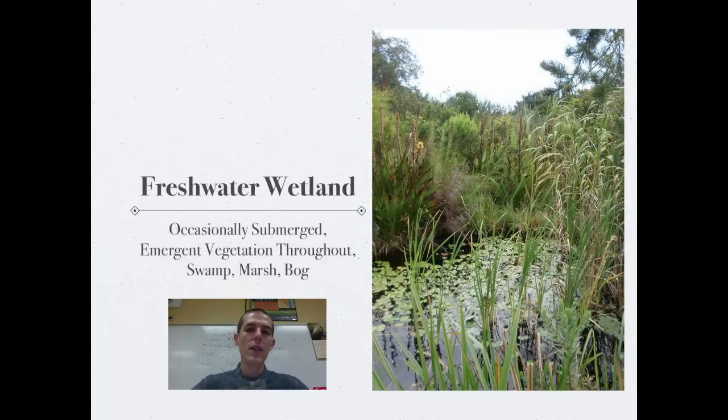The next freshwater ecosystem for you is going to be a freshwater wetland. These are areas of land that are occasionally to always submerged. They can occasionally dry out. They've got emergent vegetation throughout. So all the way across this ecosystem there are trees and grasses and cattails and stuff that are going to grow from the bottom up through the water.